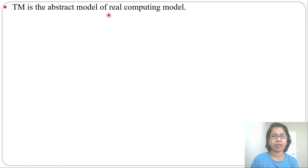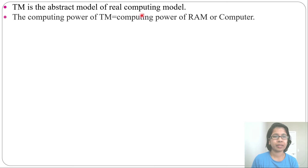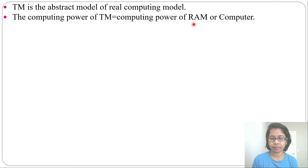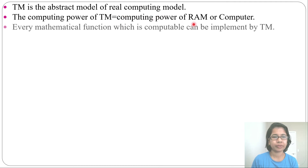Turing machine is an abstract model of a real computing model. Whatever a real computer can do, a Turing machine can also do. The computing power of a Turing machine is equal to the computing power of RAM or a computer. That's why it is called an abstract model of a real computing model — its computing power is the same as RAM or a computer.